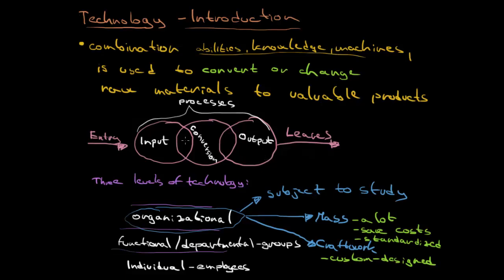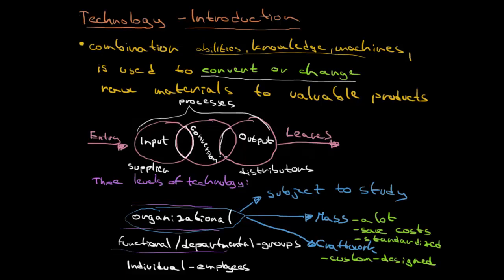If you imagine any kind of process in a company, think about the functions connected to each stage. At the input stage there might be a manager taking care of suppliers — so supplier management. Then there is the conversion process where we change and convert the raw materials. Finally, the products leave the company as output — for example, selling to distributors. These three stages are always connected and interlinked, and in future videos you will see how the functions in a company depend on each other.